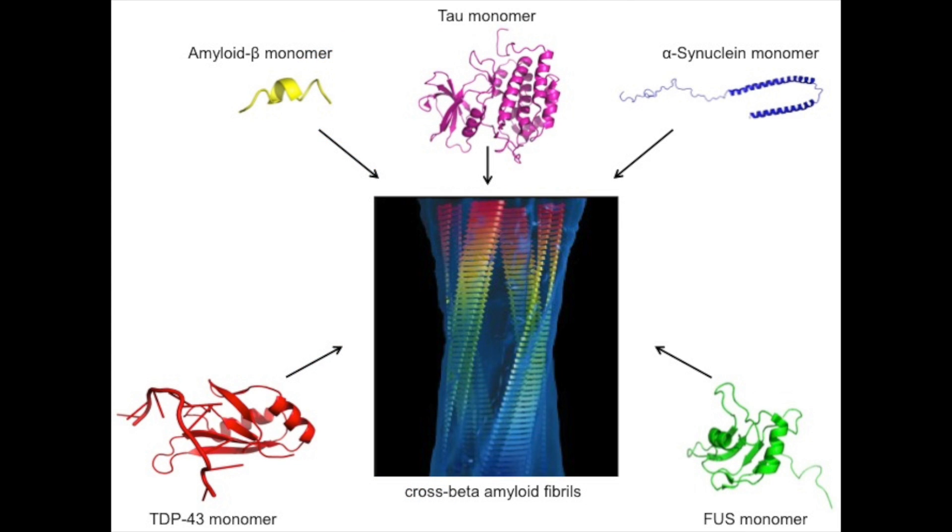Although the causative proteins in these neurodegenerative diseases are composed of distinct primary sequences and three-dimensional structures, they can all adopt a similar generic amyloid conformation. This cross-beta-sheet structure is highly stable, thus making them less amenable to disaggregation.